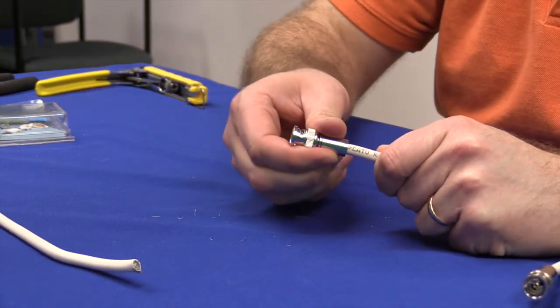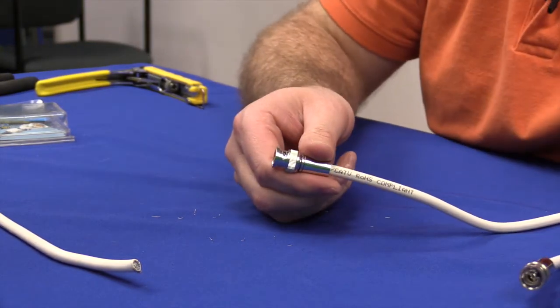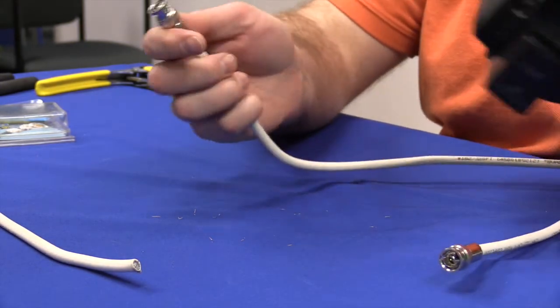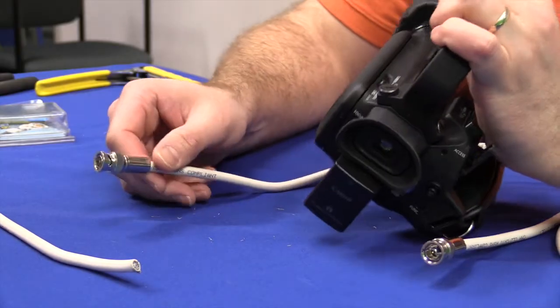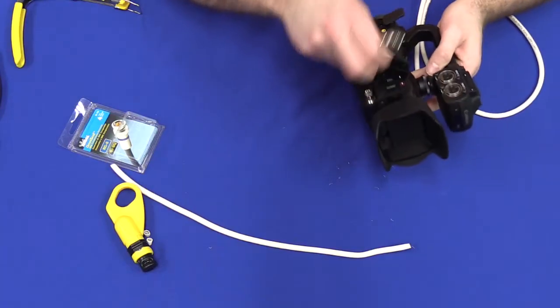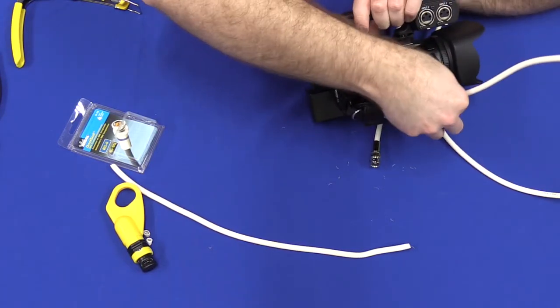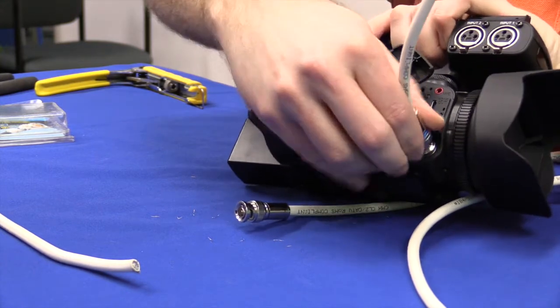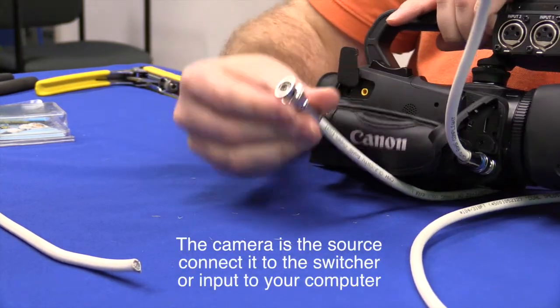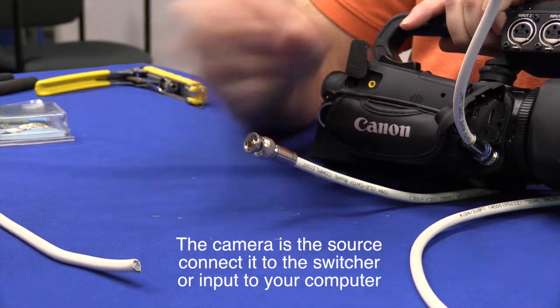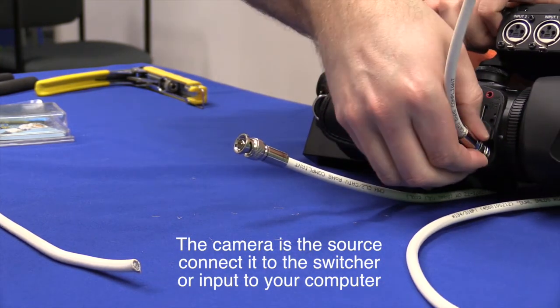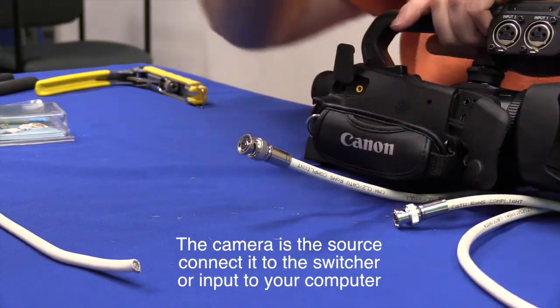And then what you will do is test this with your cameras. You want to make sure that you always test your cables before you use them. You want to plug them in. You push, you slide it on, and twist. Connect the other end to your TV or your source and make sure that everything is working. If everything is good, then this cable is ready to go and be put into use.